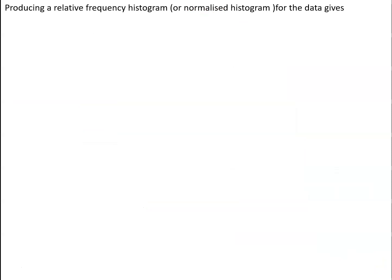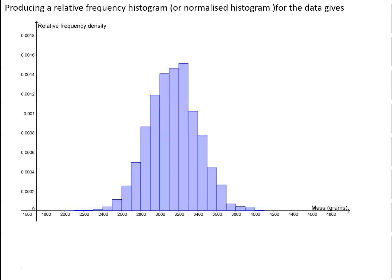So if we now produce a relative frequency histogram or normalized histogram for the data, we do that by simply dividing the frequency densities by 2,000, which means now that we've got a graph, the area under which is equal to 1.